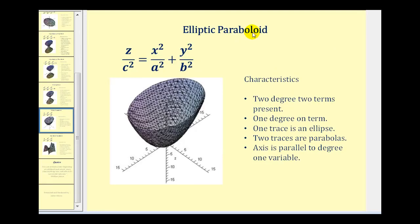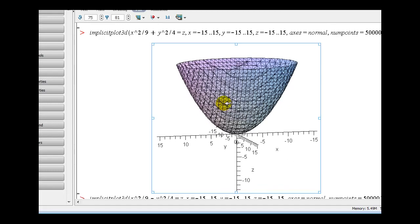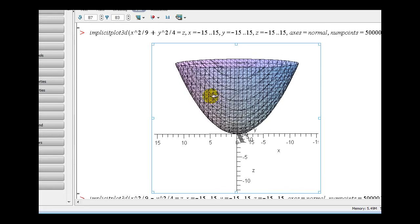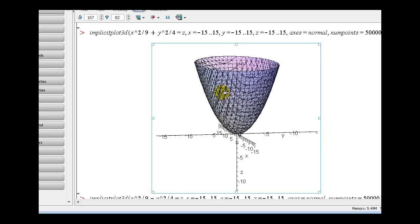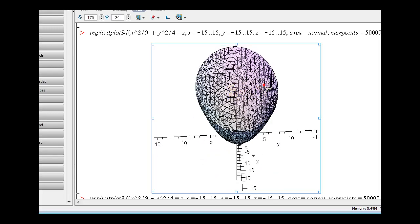Next, we have the elliptical paraboloid. Notice now there are only two degree two terms and one degree one term. Here the z term is degree one, but again, it doesn't have to be the z term — it could be the x or the y term that's degree one. Two traces will be parabolas and one trace will be an ellipse, and the axis will be parallel to the degree one variable. Here's the elliptical paraboloid. Notice the xz trace is a parabola, as well as the yz trace, and the xy trace is elliptical. This is the elliptical paraboloid.